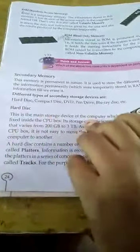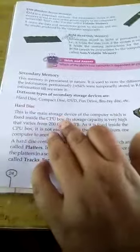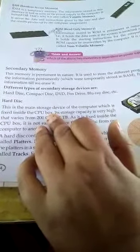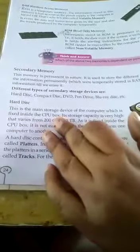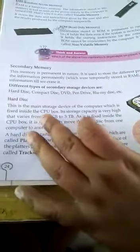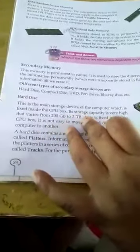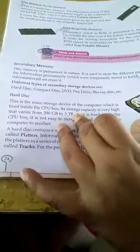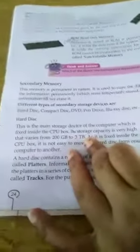Now hard disk. This is the main storage device of the computer which is fixed inside the CPU box. Its storage capacity is very high. It varies from 200 GB to 3 TB. As it is fixed inside the CPU box, it is not easy to move the hard disk from one computer to another.